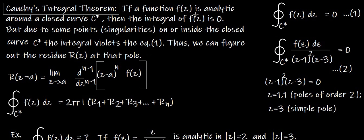If a function f(z) is analytic around a closed curve C*, then the integral of f(z) is zero. The first condition is that f(z) should be analytic, and the line integral of f(z) around the closed curve C* equals zero. But due to some points called singularities on or inside the closed curve C*, the integral violates this equation — meaning the integral will not be equal to zero.